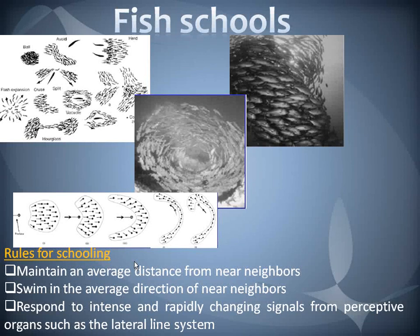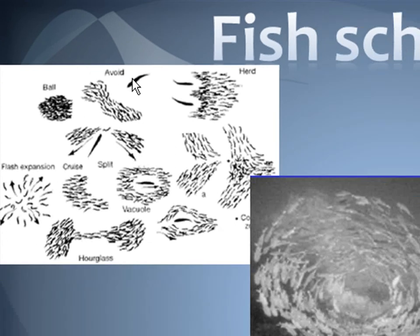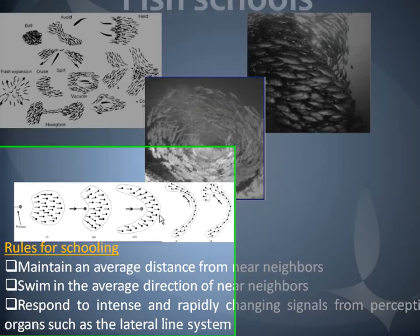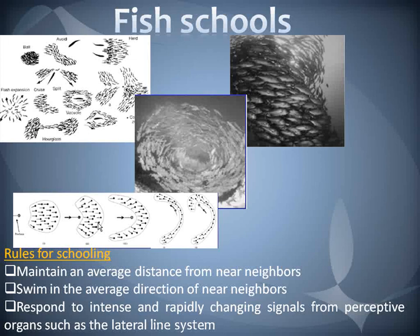Let's talk about fish schooling. The theory is the same as a bird swarm, but in this case we are considering three rules for schooling. The first one is to maintain average distance from near neighbors — as you can see in this picture, they avoid and keep some distance from their near neighbors. The second one is to swim in the average direction of near neighbors. They respond to intense and rapid change signals from perceptive organs such as the lateral line system. By following this rule, the ultimate result will be survival.